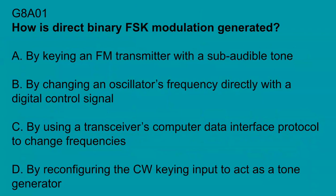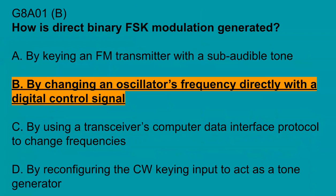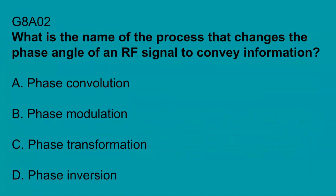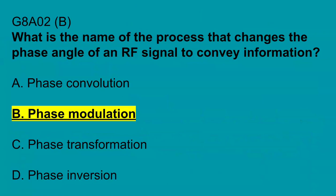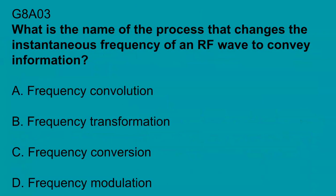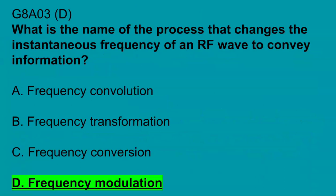G8A01: How is direct binary FSK modulation generated? By changing an oscillator's frequency directly with the digital control signal. G8A02: What is the name of the process that changes the phase angle of an RF signal to convey information? Phase modulation. G8A03: What is the name of the process that changes the instantaneous frequency of an RF wave to convey information? Frequency modulation.